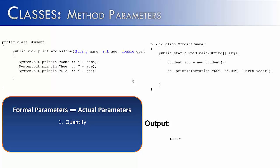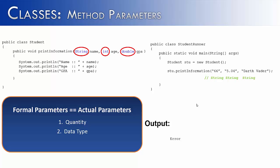This next example would also result in an error. Notice that I have three strings as the actual parameters — 66, 5.04, and Darth Vader. The quantity is the same, but the data type is not. The method needs String, int, and double — but this is String, String, String. Java would not let us perform this method call because the data types are not matching up. Data type is another way that formal and actual parameters must be the same.